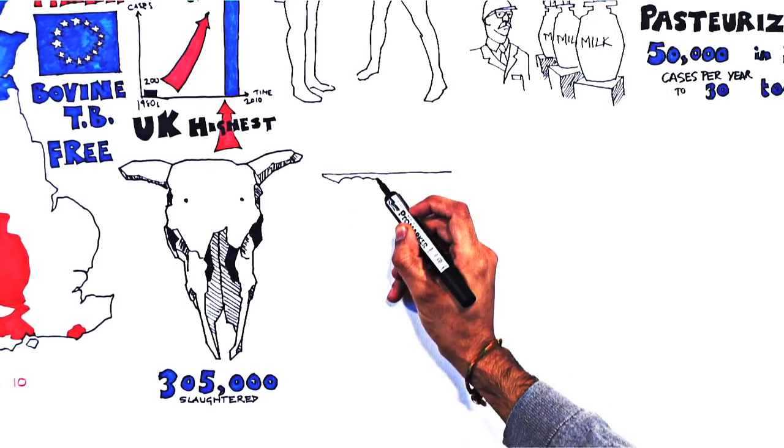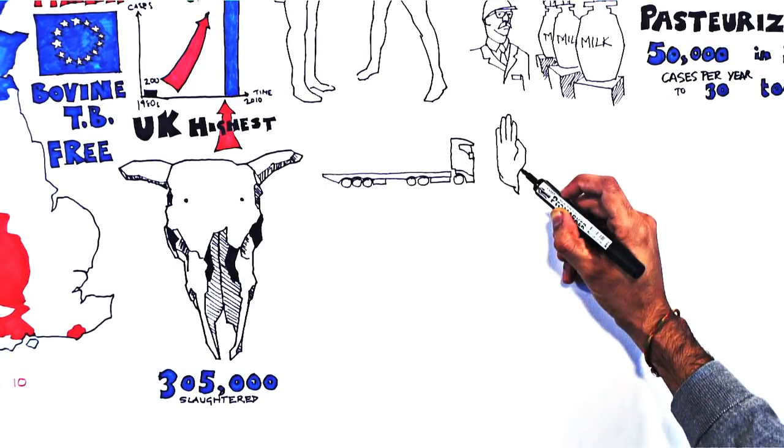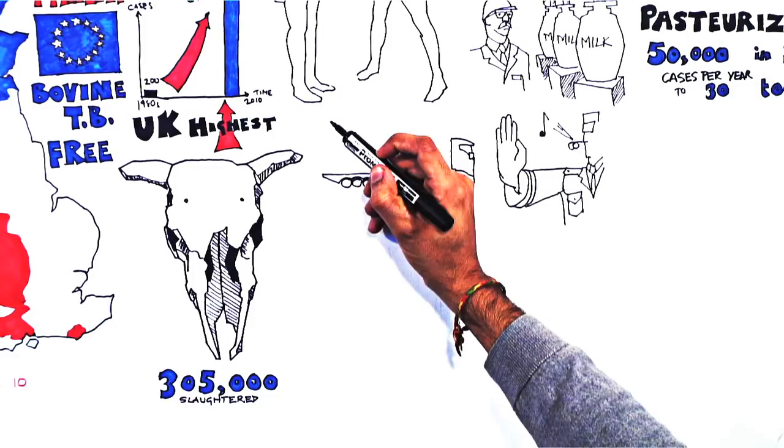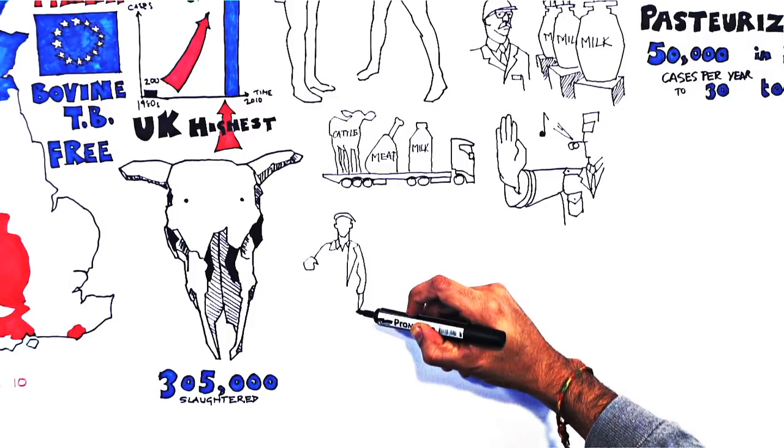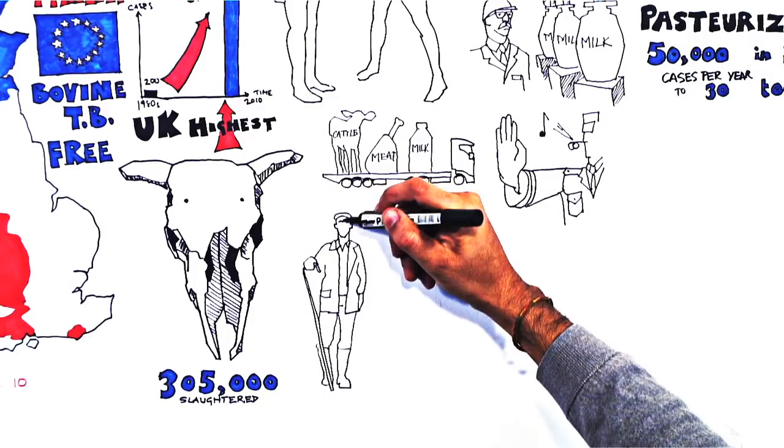The disease, and the measures applied to control it, have significant social and economic impacts, disrupting trade in cattle, meat and milk, and threatening the financial sustainability of the livestock sector.